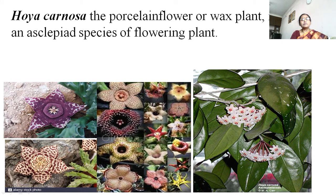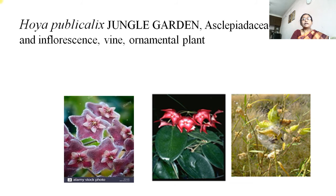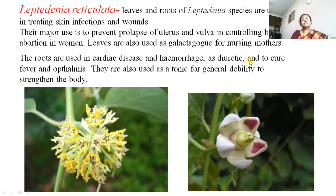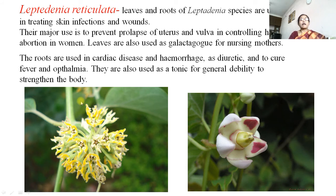Hoya carnosa is the wax plant of the family — when we break any part of this plant we get a wax-like structure, a very thick latex, hence it is called the wax plant. Hoya pubicalyx is a jungle garden plant. Leptadenia reticulata is very important — when we cut the stem, bi-collateral vascular bundles are clearly visible, making it very useful as a practical material for botanists to prepare sections.